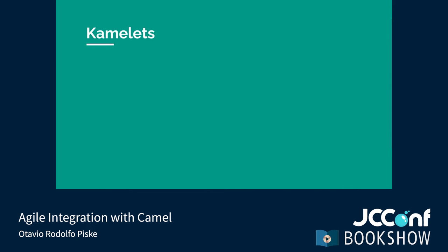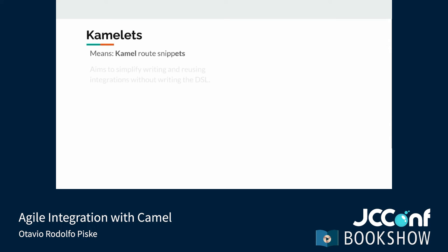Reusing solutions is something we value as developers, and it's no different with integration solutions — that's why we developed Camelets. Camelets means Camel route snippets. Their objective is to simplify writing and reusing integrations. It is possible to write route snippets and export them to be used by other applications. Camelets are not limited to describing components; they can describe actions in parts of a route — for example, extracting or enriching fields in JSON data, adding or removing headers and messages.